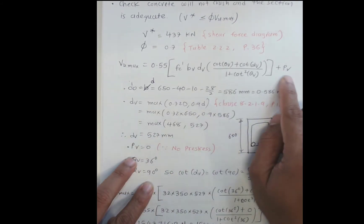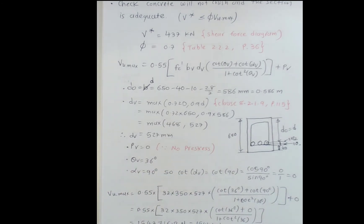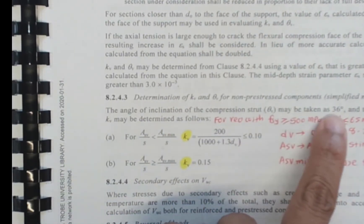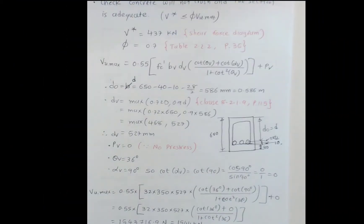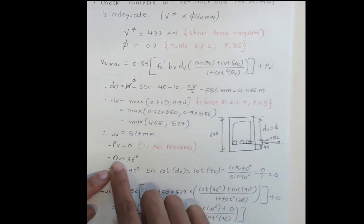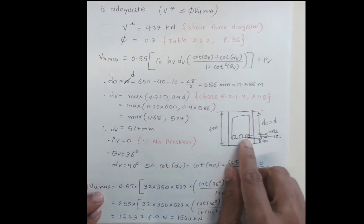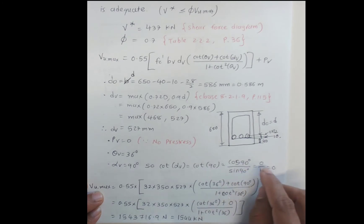This is not a prestressed example, so we take Pv equal to zero. θv equals 36 degrees, given in the Australian Standard on page 119, clause 8.2.4.3. θv is the angle of the crack. αv equals 90 degrees because we have fitments at 90 degrees to the longitudinal axis. Cot 90 degrees is cos 90 over sin 90, which equals zero.